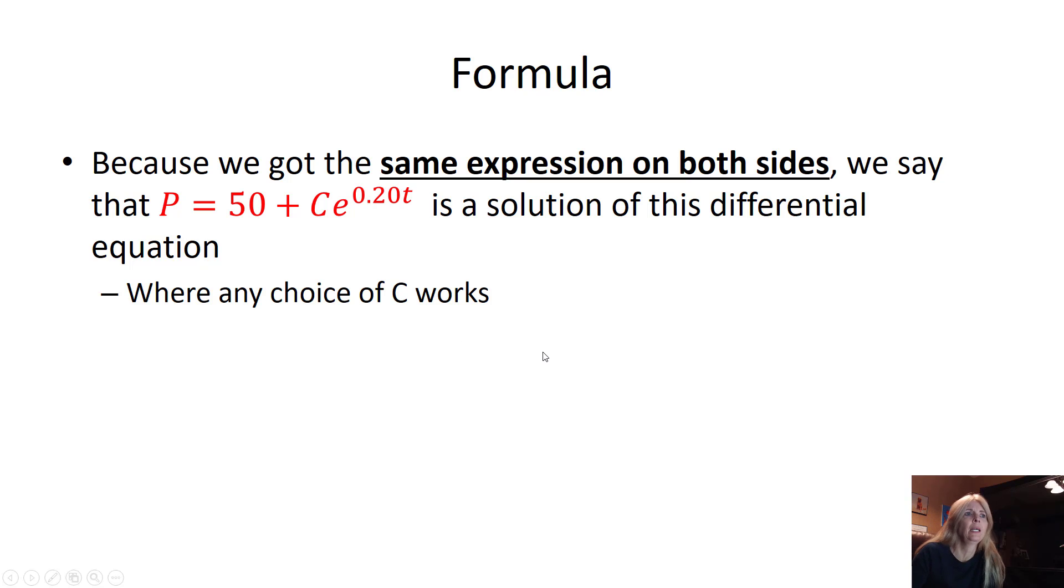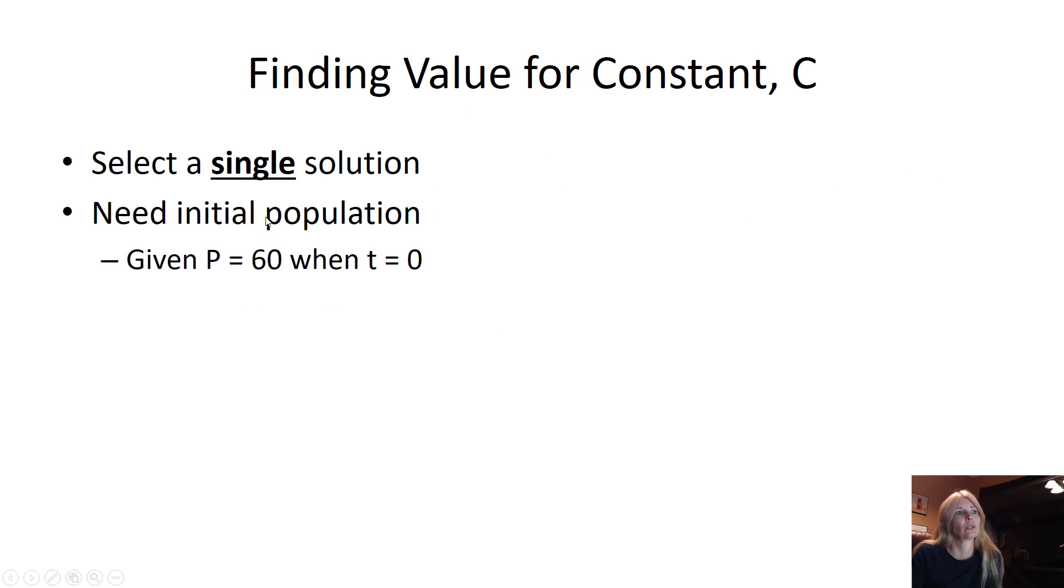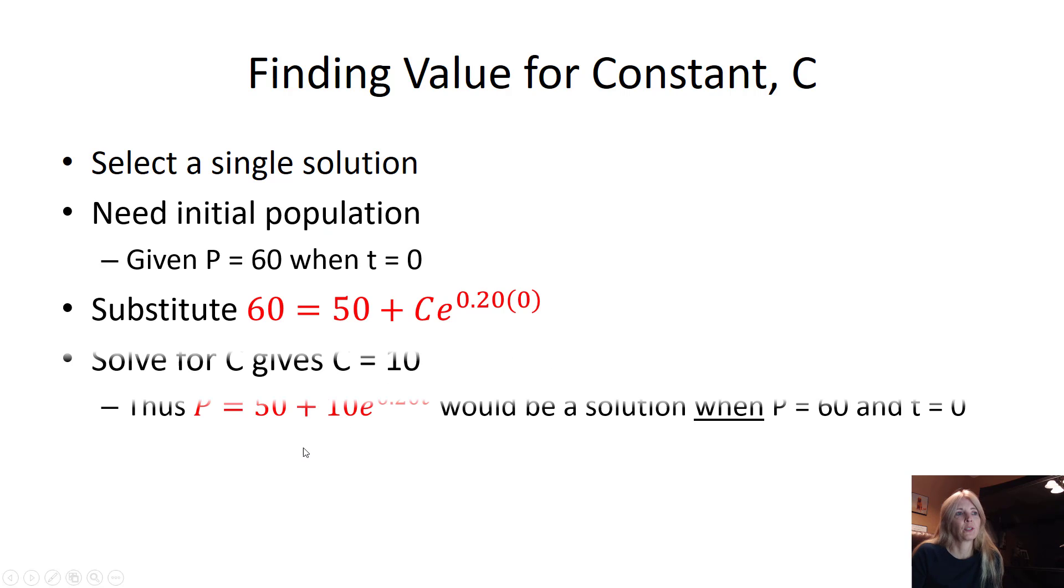Same thing works with C. If we had some initial information, we could solve for it. So any choice of C will work. But if we're given something like, let's say, select a single solution instead of the general solution, we're given at t equals 0, P equals 60. So I can substitute: P is 60 when t equals 0. And I can solve this and find C equals 10, because e to the 0, that's going to be 1. So 60 minus 50, 10 equals C. And I plug in my value of C. So this is actually, if I have an initial amount, I can plug in for my single solution to my differential equation. So this is only the solution when my initial value is 60.